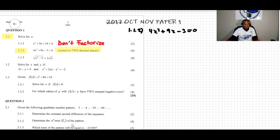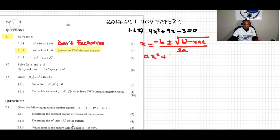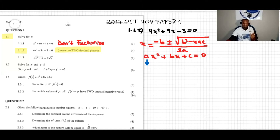The quadratic formula is given by x equals negative b plus or minus square root of b squared minus 4ac, all over 2a, where the standard quadratic equation is ax squared plus bx plus c equal to zero. The main idea is to identify the values of the coefficients a, b, and the constant c.